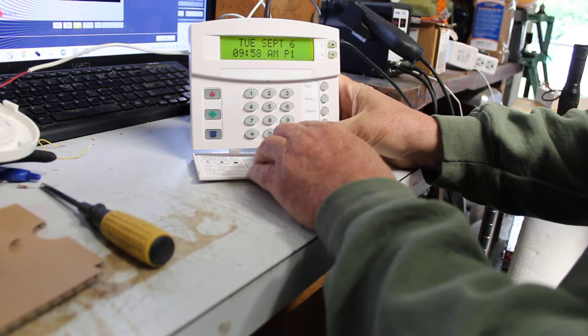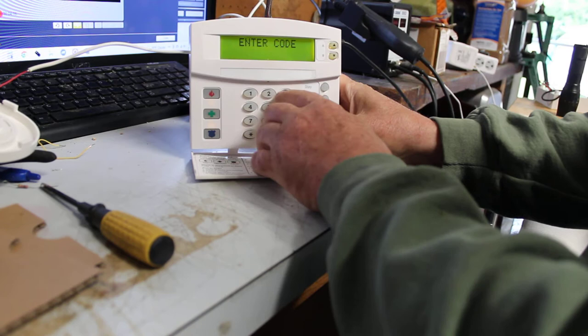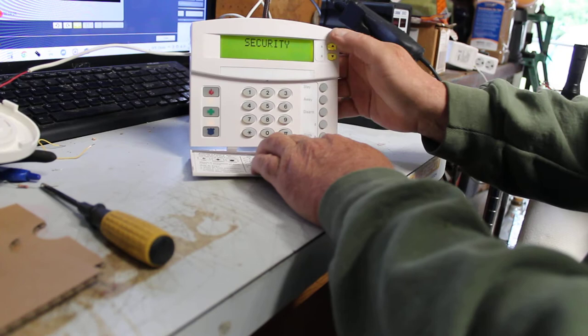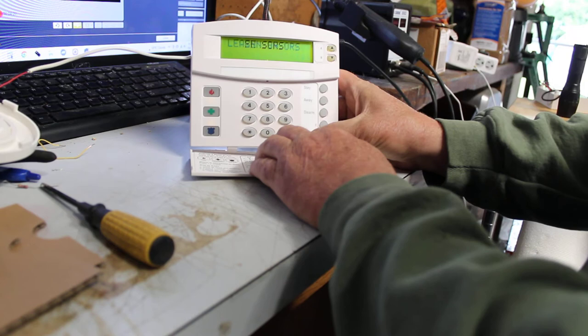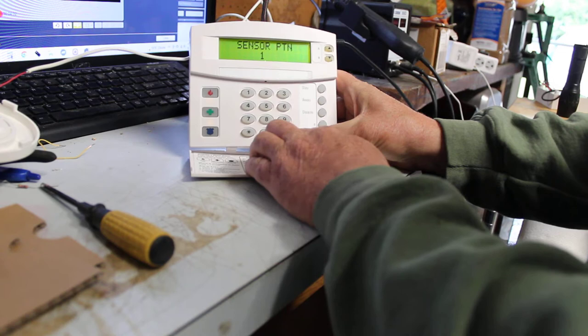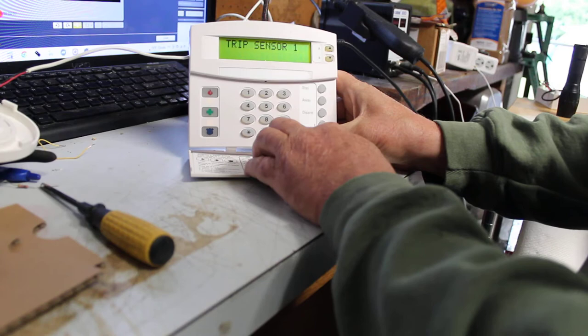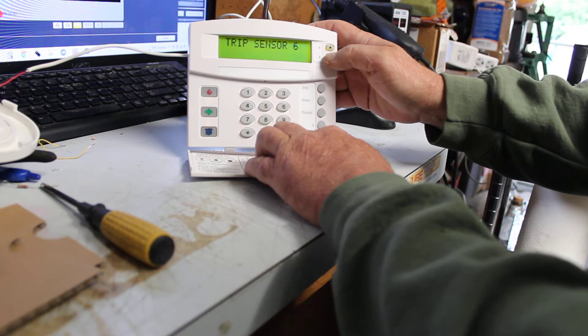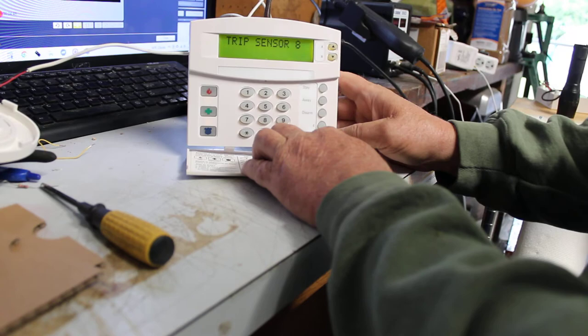Let's put this to the side for now. Let's go into program and program zone 8 as a fire. We go 8-4-3-2-1-0-0, system program, hit the pound, go up to sensors, sensors, hit the pound, learn sensors, hit the pound, partition 1, hit the pound, sensor group is 2-6, hit the pound. Now you want to go up to zone 8 because that's what is used for fire alarm and heat detectors on a Concord 4 and a Concord Express.